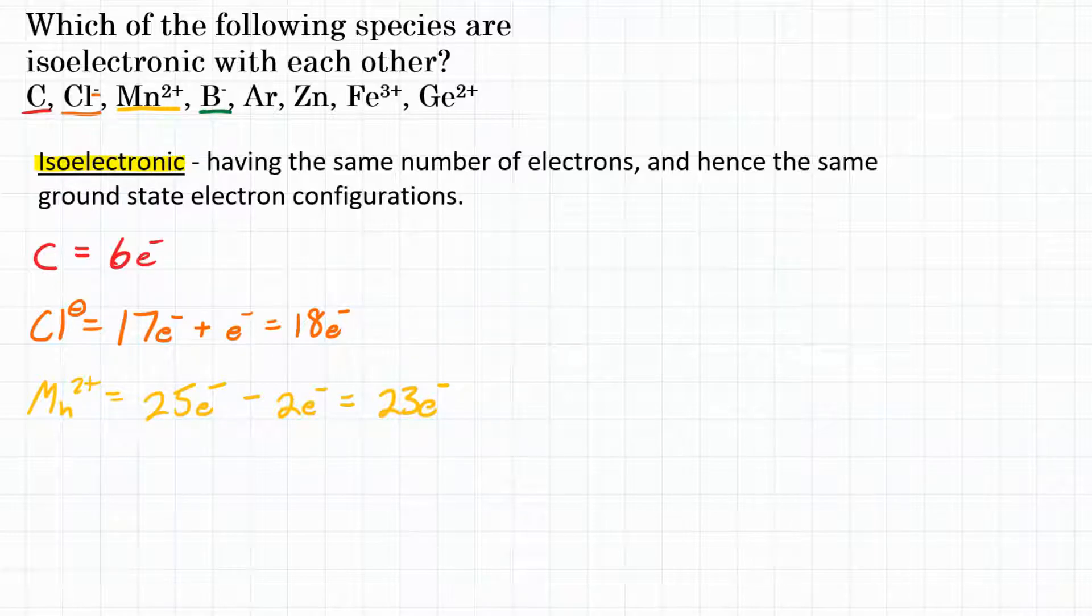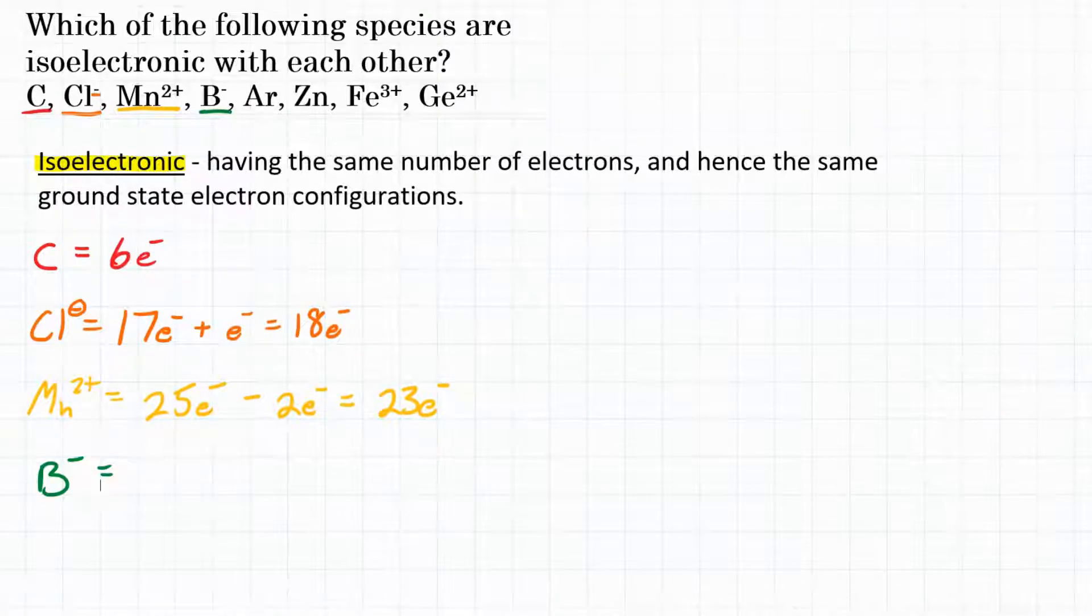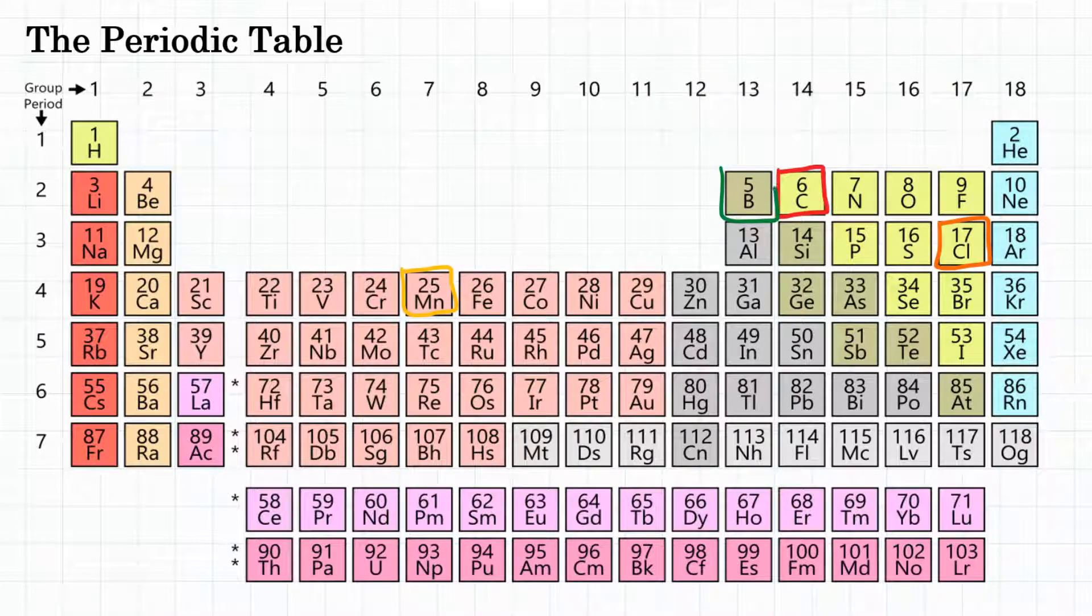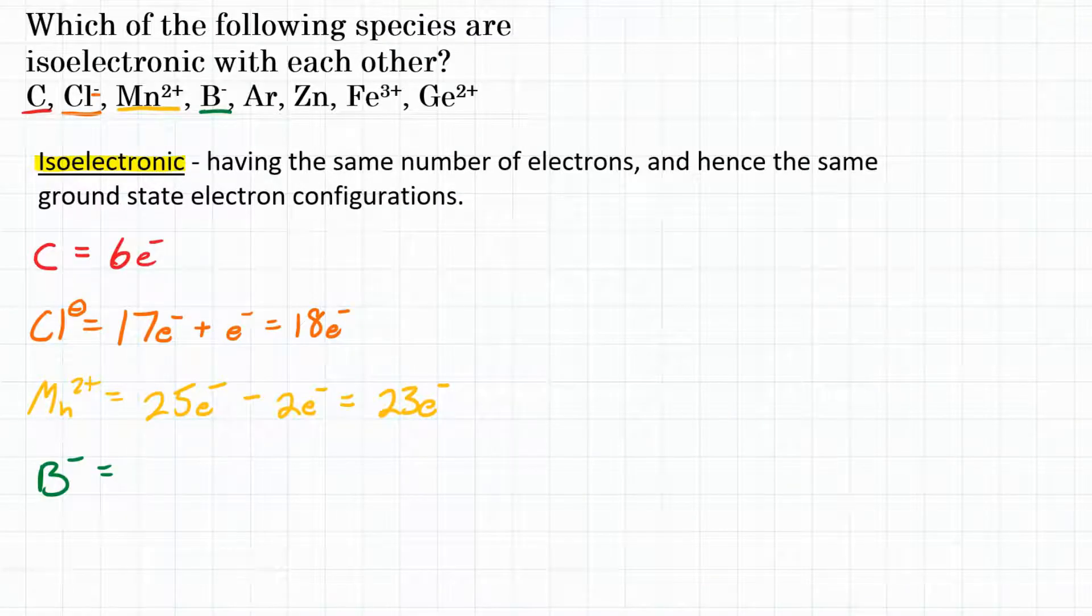Now we have boron minus 1. Looking at the periodic table, we see boron right here as element number 5. That means it normally has 5 electrons as a neutral atom, but it is boron negative 1. So that means we have an extra negative electron there. We're going to add 1 electron for a total of 6.